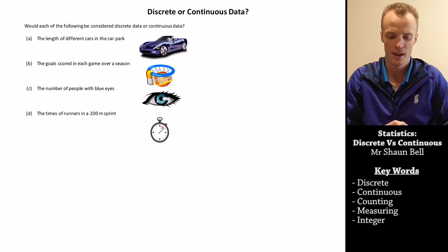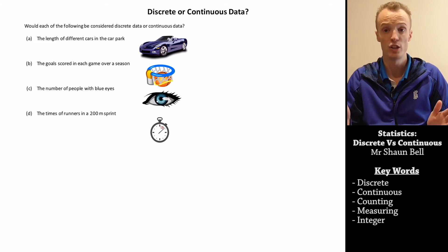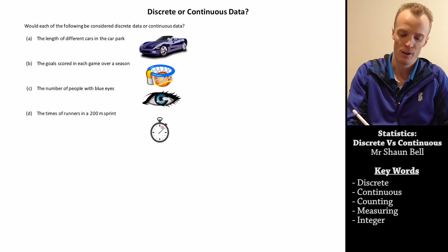So what do you reckon? Well, let's start with A. A is the length of different cars in the car park. Now that would be something that you would measure, and it could be anywhere on that number line. So that would be continuous data.